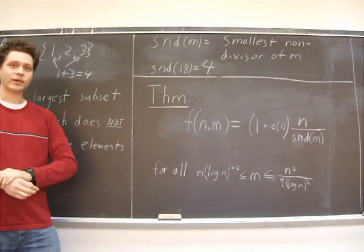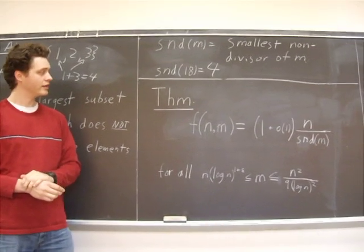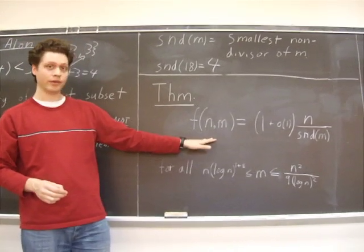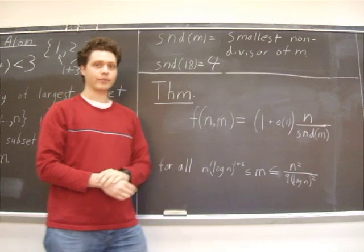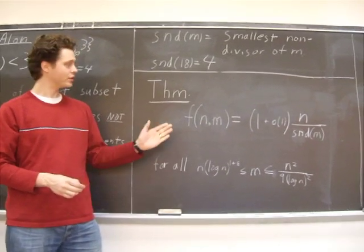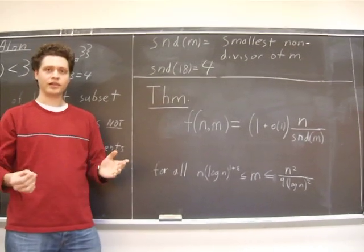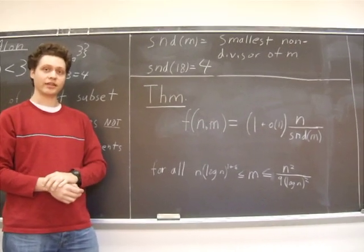This result was conjectured by Alon in 1987. And there's a natural lower bound on f(n,m) of roughly n divided by the smallest non-divisor of m. And so the theorem essentially states that the function f(n,m) asymptotically achieves that lower bound.